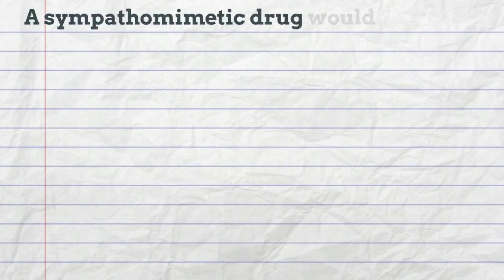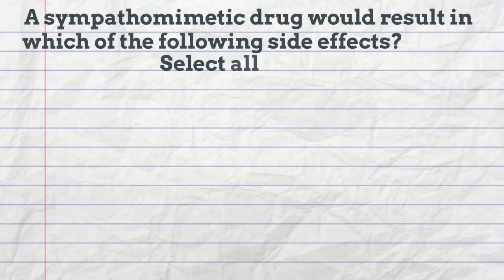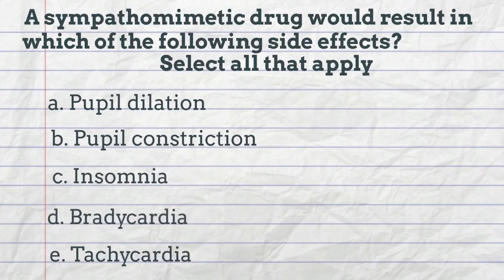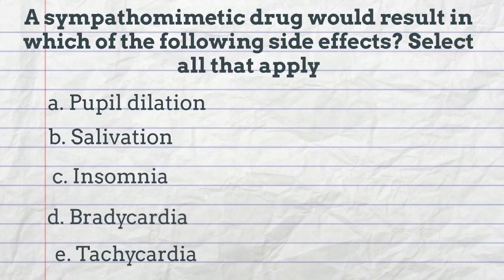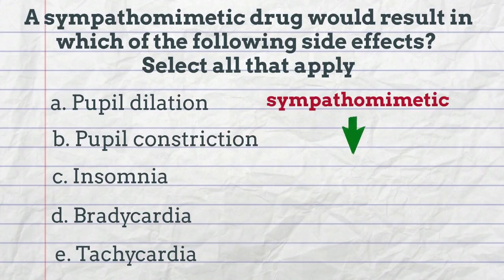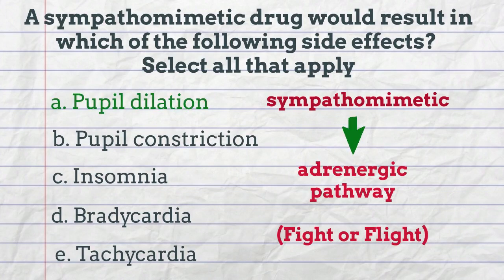A sympathomimetic drug would result in which of the following side effects? Select all that apply: pupil dilation, pupil constriction, insomnia, bradycardia, tachycardia. Sympathomimetic is another term used to represent the adrenergic pathway. Pupil dilation, insomnia, and tachycardia are expected physiologic outcomes when adrenergic drugs are given.